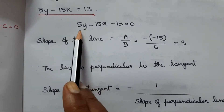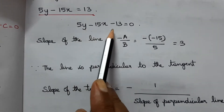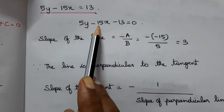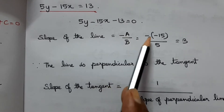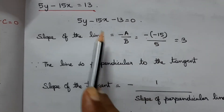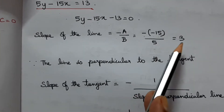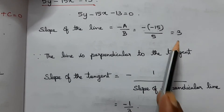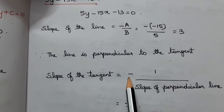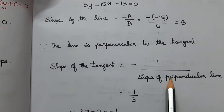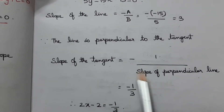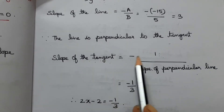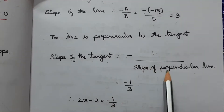The line is 5y - 15x = 13, or in the form ax + by + c = 0. Here a = -15, b = 5. Slope of the line = -a/b = -(-15)/5 = 3. Since m₁ × m₂ = -1, the slope of the tangent m₂ = -1/3.